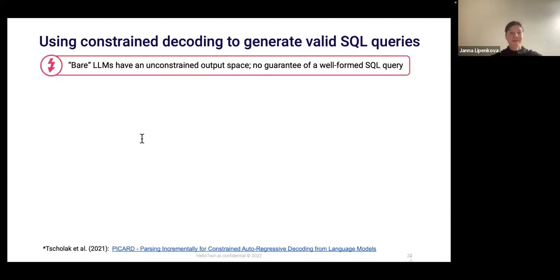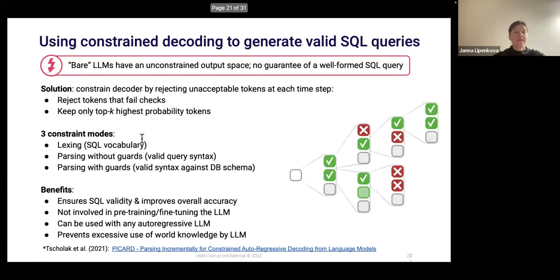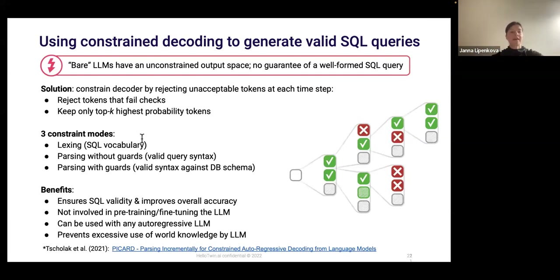Now the second challenge is at the output. Language models have an open output space — they can generate anything, and there is no guarantee the output will be well-formed SQL. At this point we use an additional algorithm called PICARD, which constrains the decoder by rejecting unacceptable tokens at each generation step. It implements deterministic checks, and tokens that fail the checks are rejected. At each step, the algorithm keeps the top-K highest probability tokens for the next step.